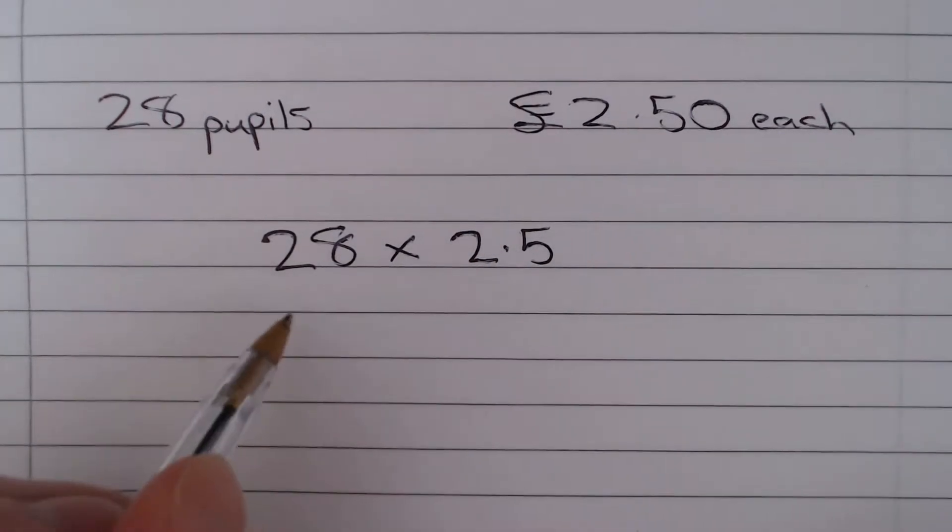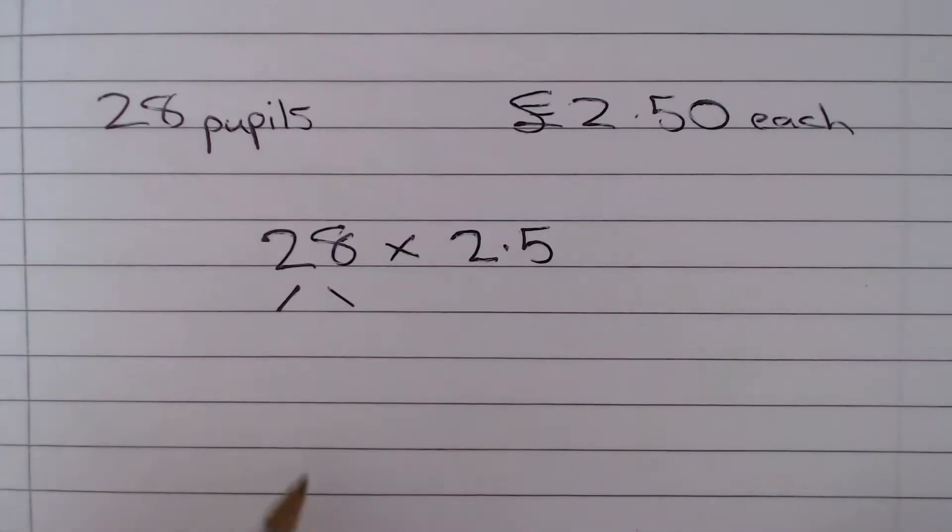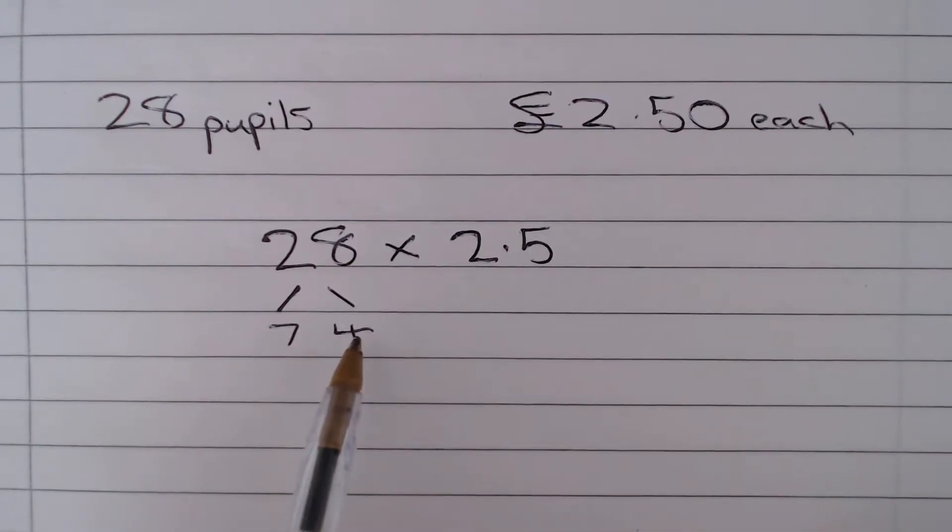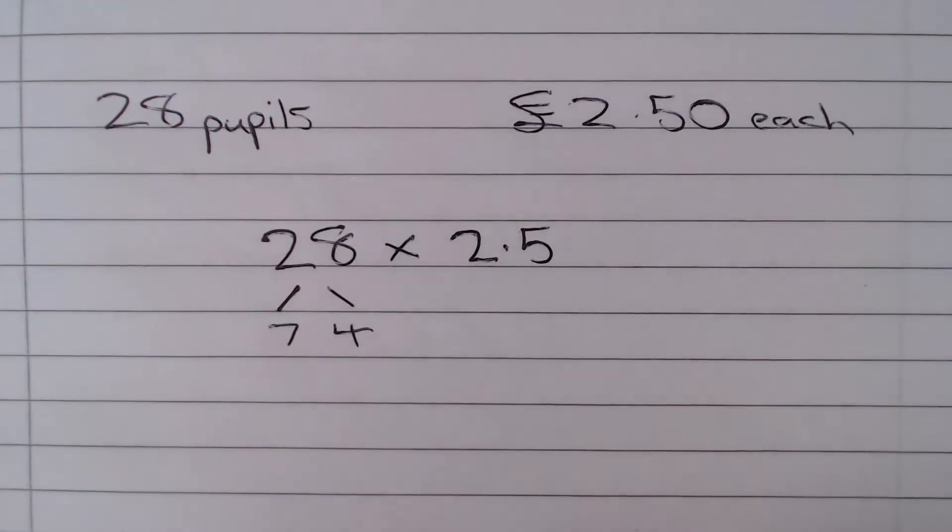So 28 I can write as 7 times 4, but 4 times 2.5 is £10.